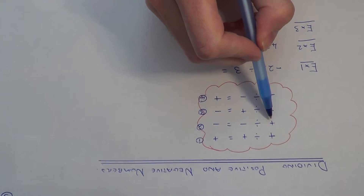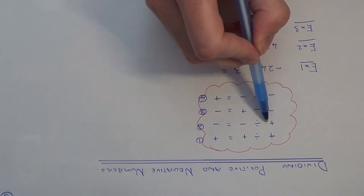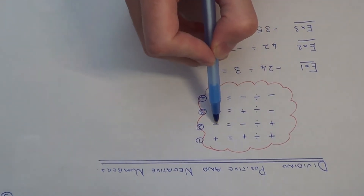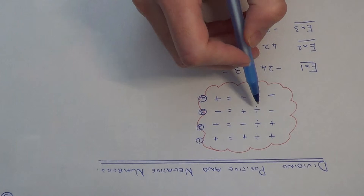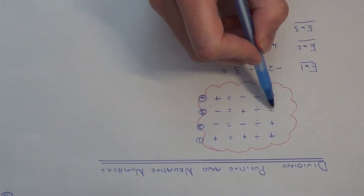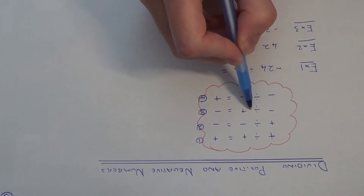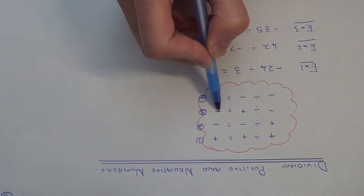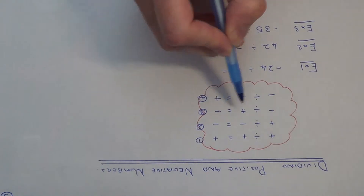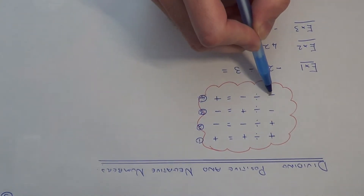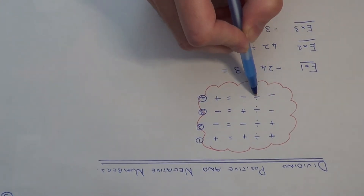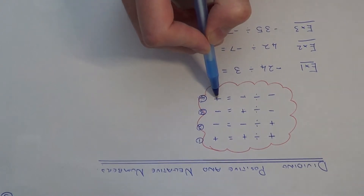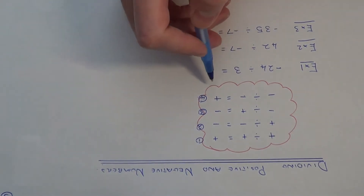If you divide a positive number by a negative number, you get a negative answer. If you divide a negative number by a positive number, you get a negative answer. And if you divide a negative number by another negative number, you get a positive answer.